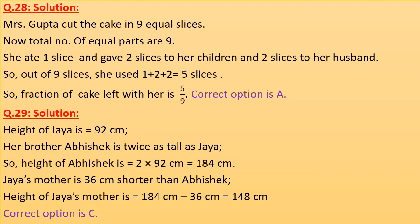Question 28 solution. Mrs. Gupta cut the cake into 9 equal slices, so total parts are 9. She ate 1 slice, gave 2 slices to her children and 2 slices to her husband. Out of 9 slices, she used 1 + 2 + 2 = 5 slices. So the fraction of cake left with her is 4 by 9. Correct option is A.